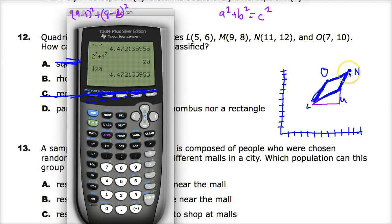Then I'm going N to O. So 11 to 7 would be 4. Plus 12 to 10 is 2. I'm not even doing the square root part here. And then finally, O goes back to L. So 7 to 5 is 2. And 10 to 6 is 4. So they're all the same. They're all square root of 20 or 4.47, depending on how you want to live your life as far as that's concerned.